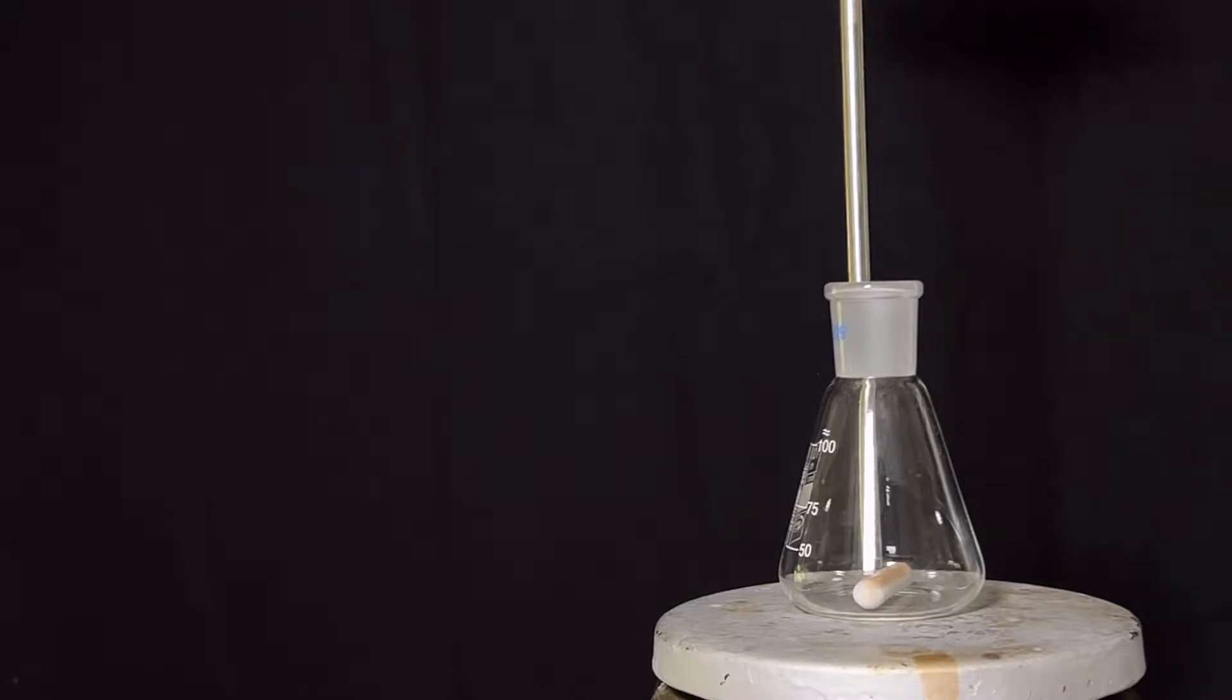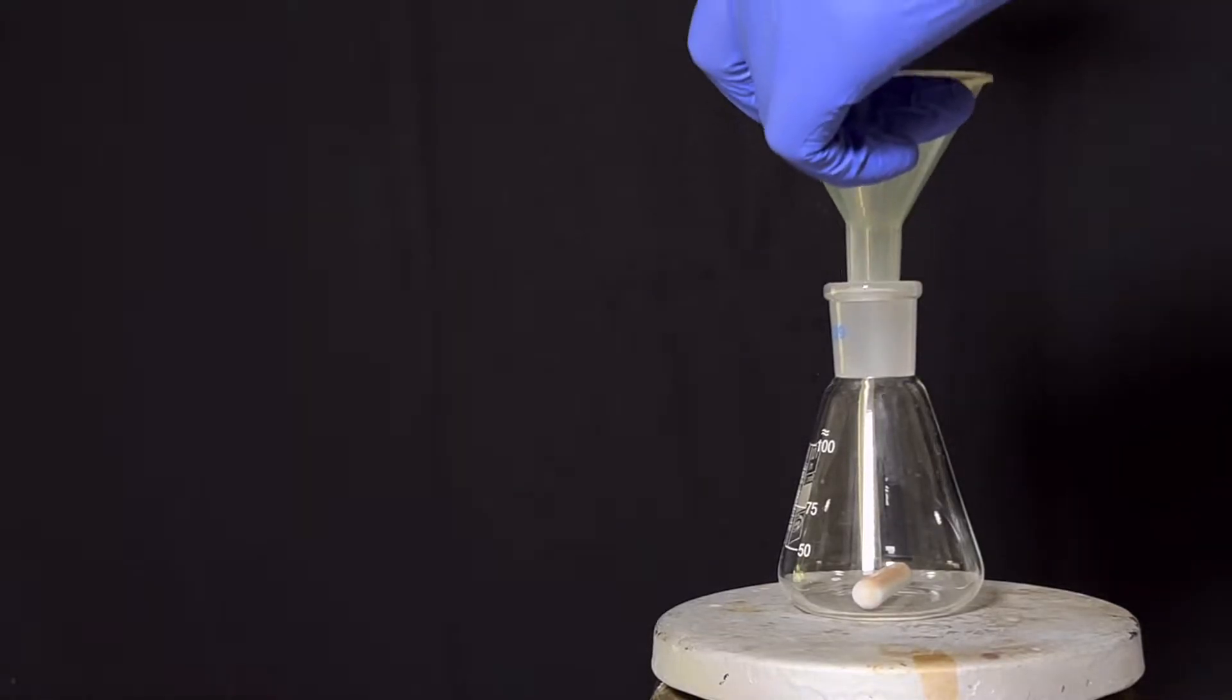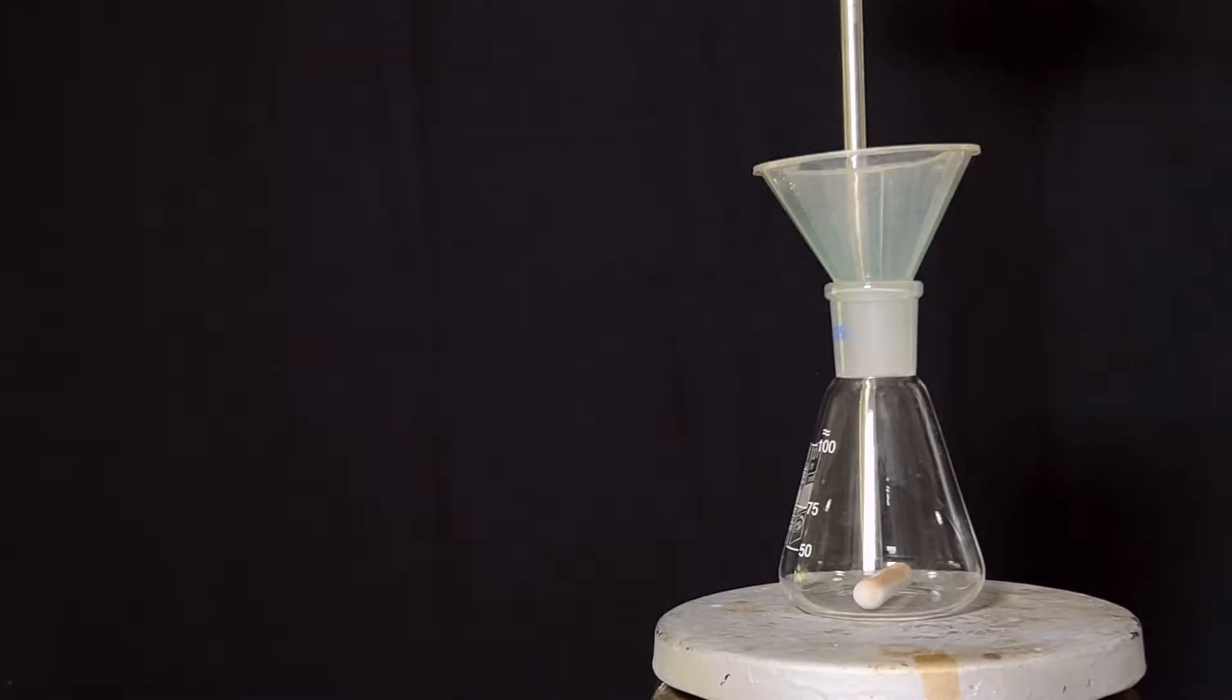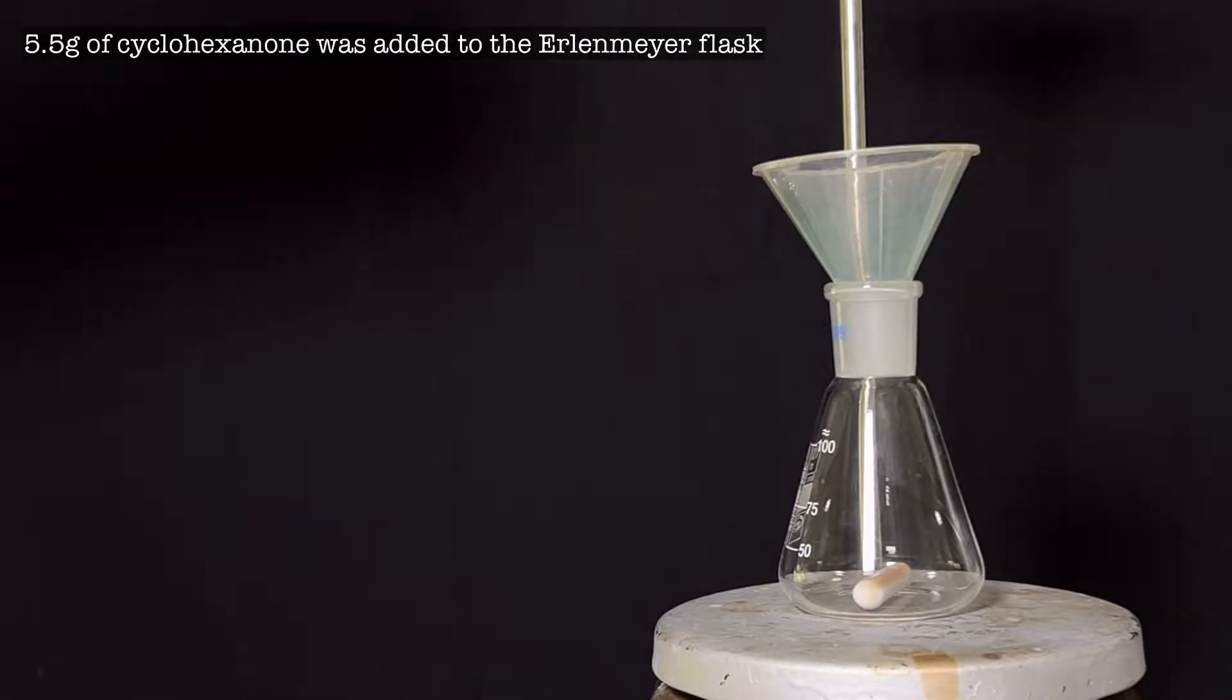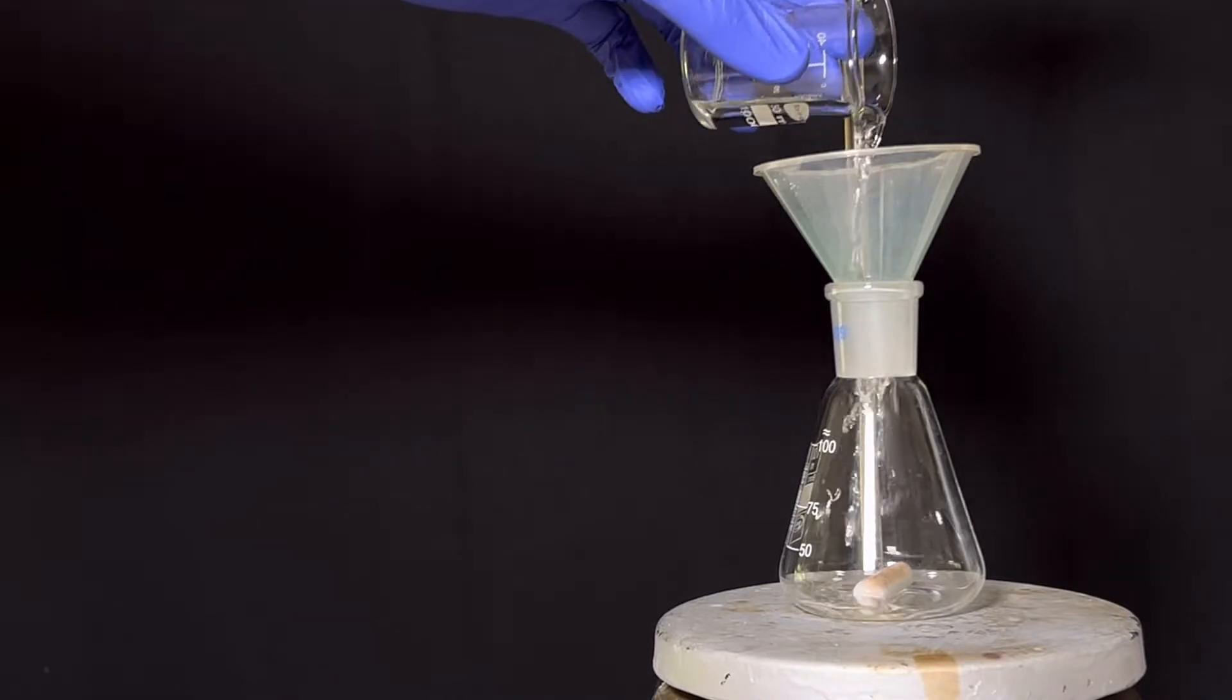Start by placing a 100 ml Erlenmeyer flask on a hotplate stirrer with a stirring bar inside. A funnel was placed on top of the flask and 5.5 grams of cyclohexanone was added to the flask.